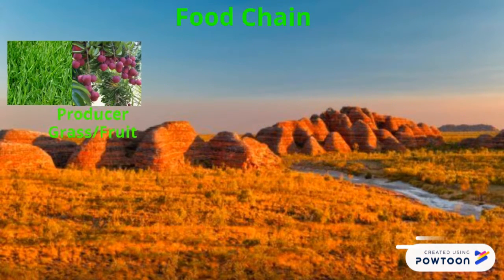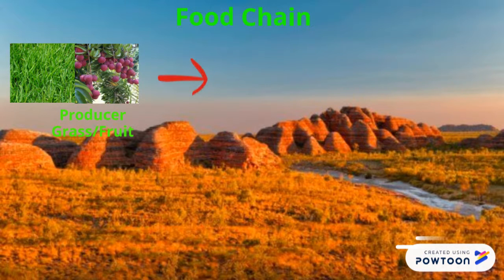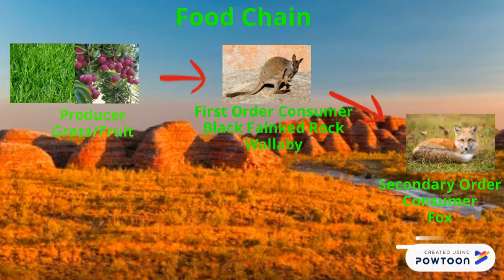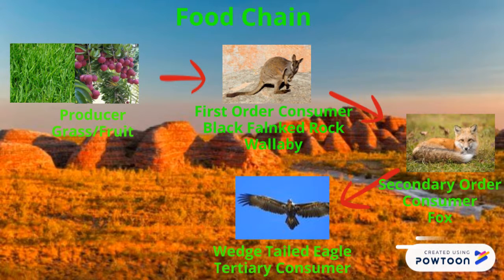For the producer, grass and fruit is eaten by the first order consumer, the Black Flanked Rock Wallaby. That is eaten by the secondary order consumer, a fox. The Wedge-tailed Eagle. That dies and is broken down by decomposers.